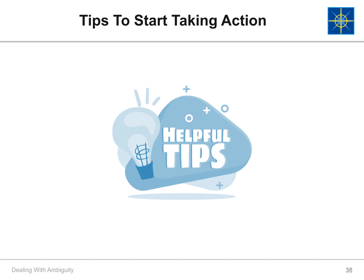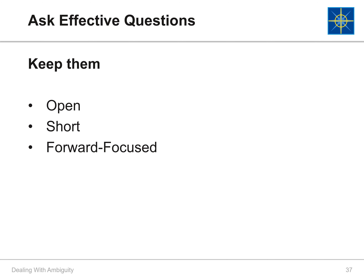Now that we understand uncertainties involved in decision-making, how do we make decisions in ambiguous times? Here are some tips. Asking effective questions will support the decision-making process. Keep your questions open, short, and forward-focused. Asking open-ended questions requires elaboration and sharing of information. Avoid questions starting with will, did, have, and why. Instead, start asking your questions with what, who, and how.